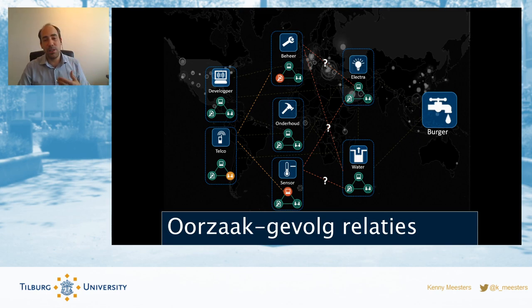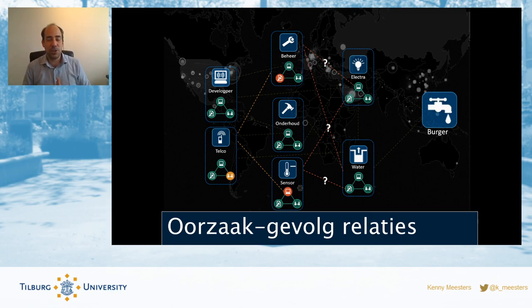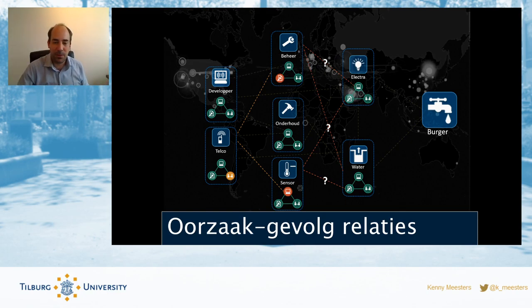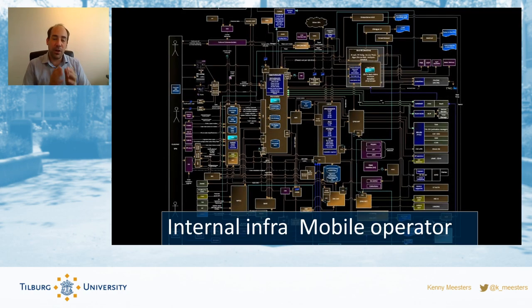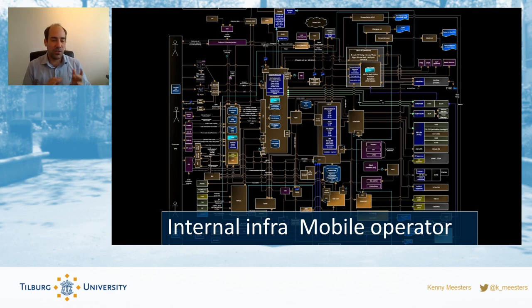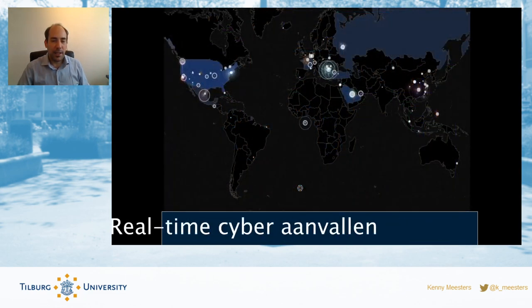An example of this was the 112 emergency number disruption last summer — a very complicated network where many systems depend on each other. A small mistake, a small software update in a subsystem, can have cascading and major effects on the overall system. To give you an idea, there's a network diagram of part of a mobile operator — every single square is a system or subsystem, and all of these must function for you to make a phone call. Just one going offline because somebody set a parameter wrong means the whole system goes down. So your single piece might still function, but because we're connecting software and systems together, it makes us more and more vulnerable.